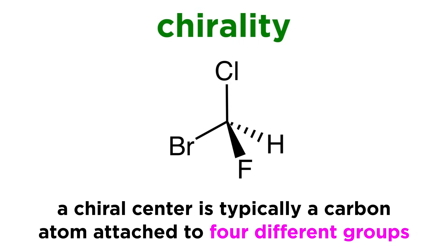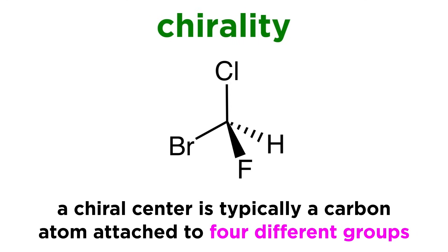But this can happen even with more than one chiral center. Enantiomers will involve the inversion of every chiral center. No matter how many are present, inverting all of the chiral centers on one enantiomer will give the other enantiomer, which will be the mirror image.